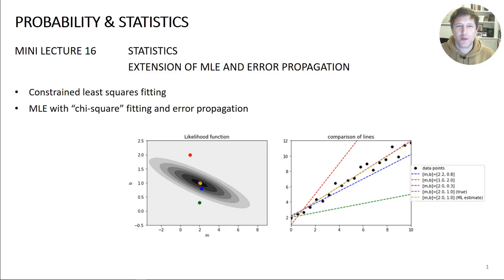So we're going to look at an example of constrained least squares fitting and we're going to use a chi-squared fitting parameter with error propagation to see how that can give more information about our fitted parameters.